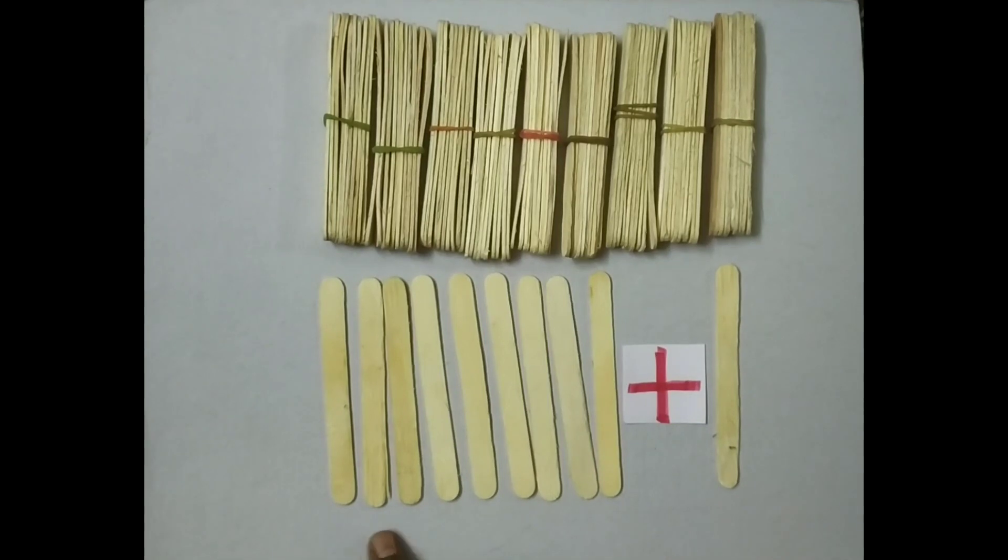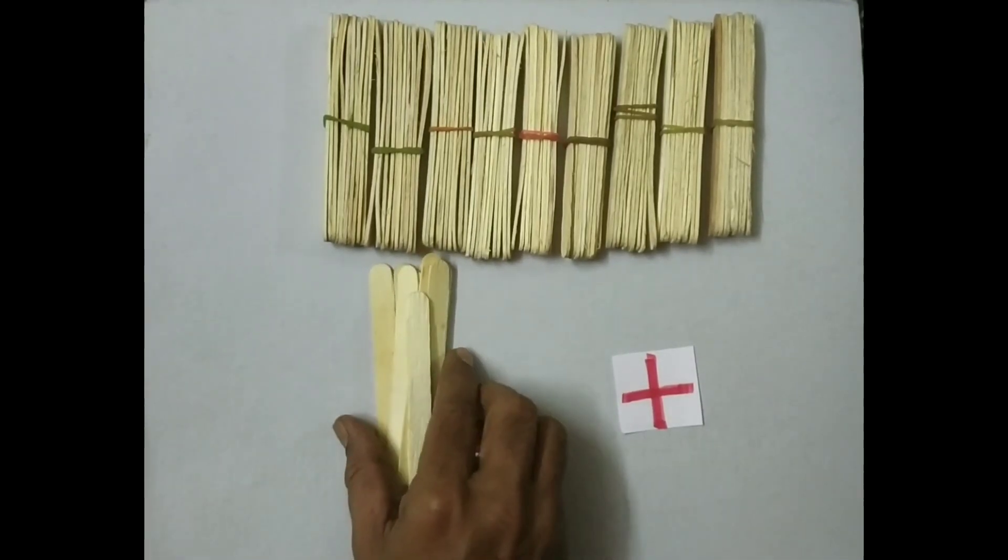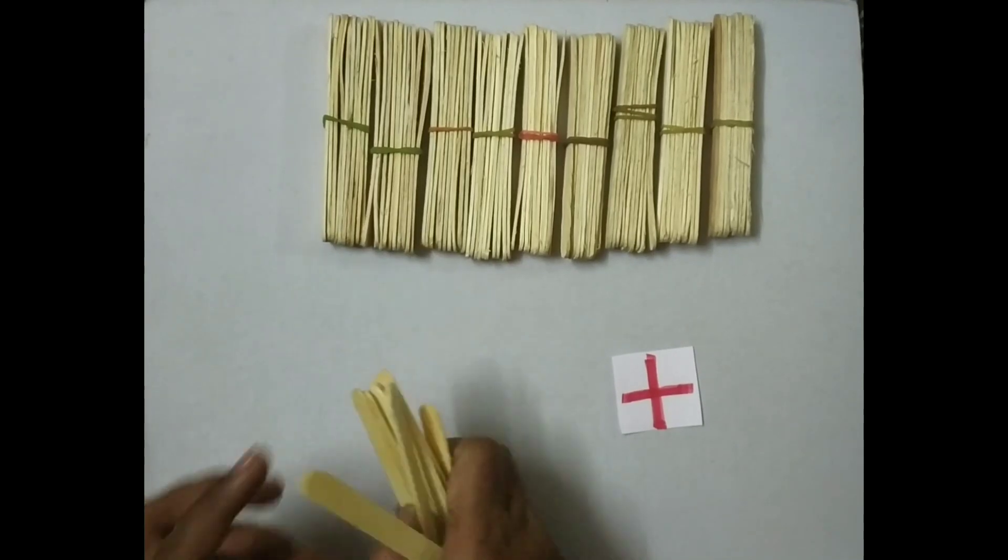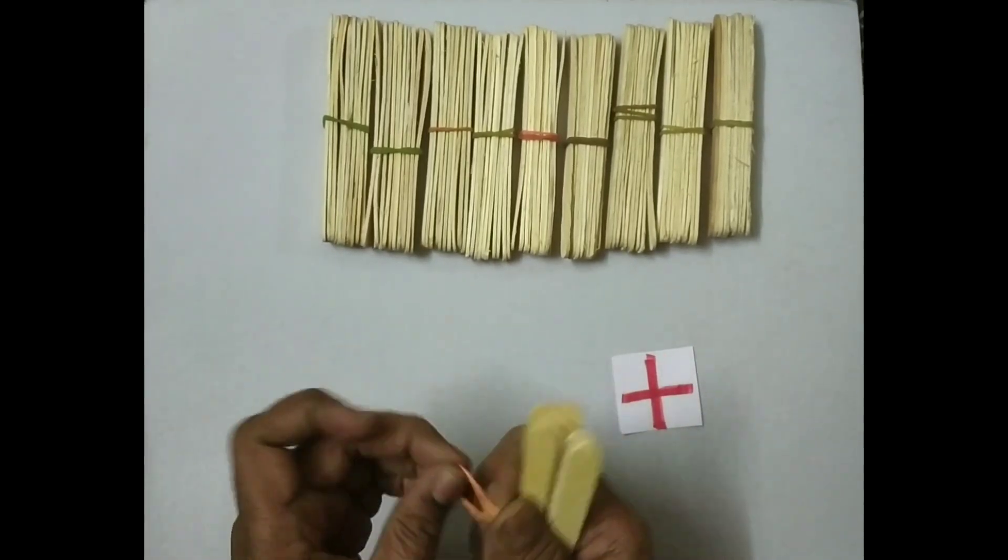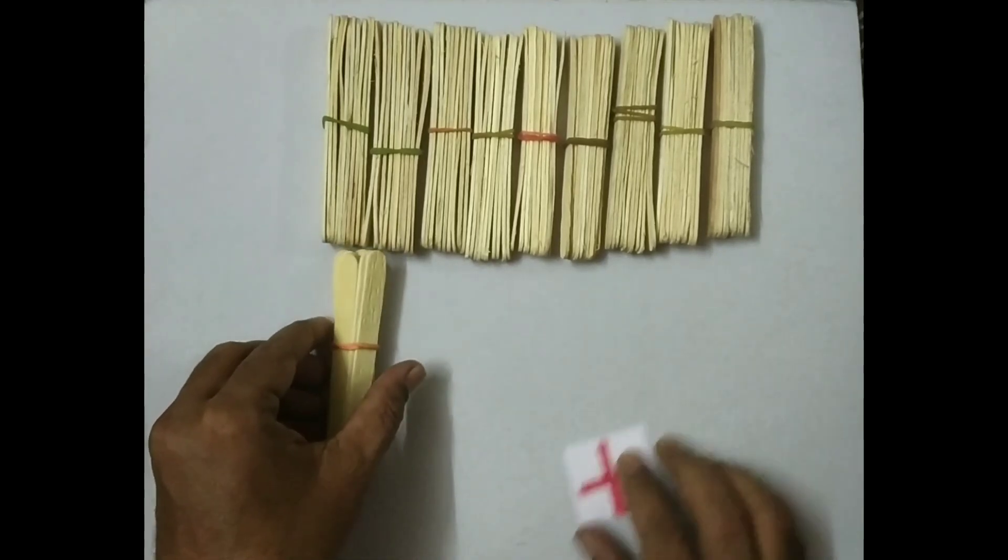This 9 units plus 1 unit, they will become 10 units. 10 units means 1 ten hua.